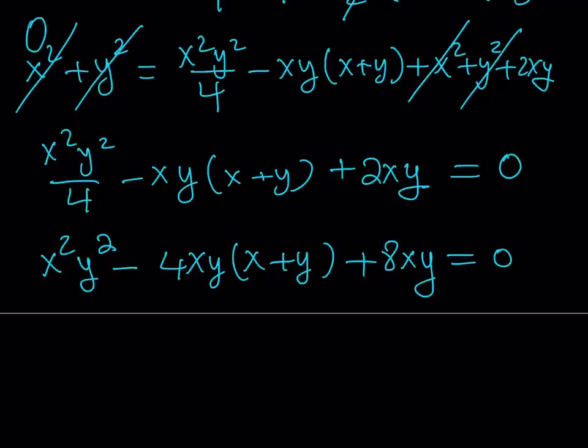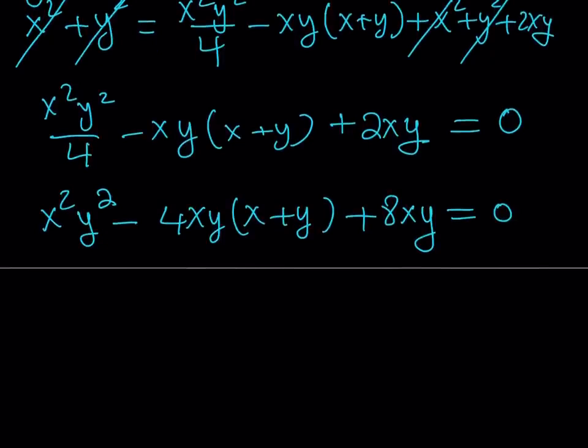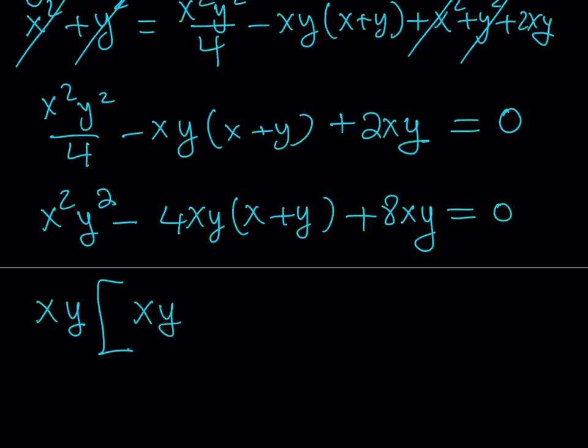This is a complicated looking expression still, but one thing that's good about this equation is that you can factor it. How? Look at it carefully. Notice that the first term contains x²y², the second one has xy in it, and the third one has xy in it. In other words, xy is a common factor. So let's factor it out. When certain things equal zero, you should definitely think about factoring. Let's take out xy here.